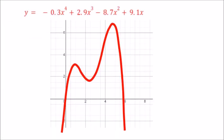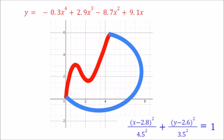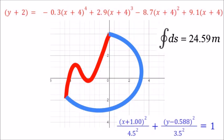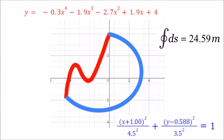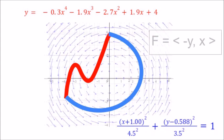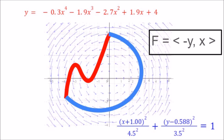This nice looking function was from Part 1, as was this ellipse. We found the arc length. Re-centering won't change that, but it will allow us to integrate this field around that closed path — the work done by the whirlpool.